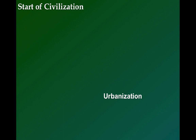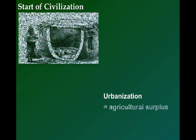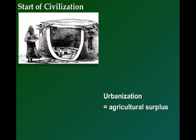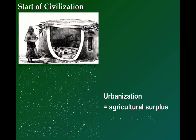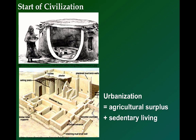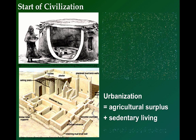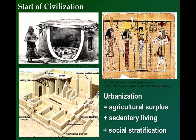The first two have already been discussed. A society needs an agricultural surplus, as well as permanent settlements for sedentary living in order to grow and expand. The third element is social stratification, which is a hierarchy of power and class structure within a society.